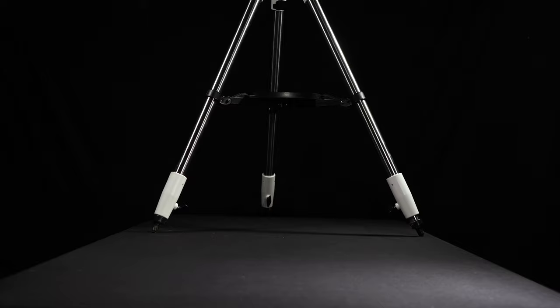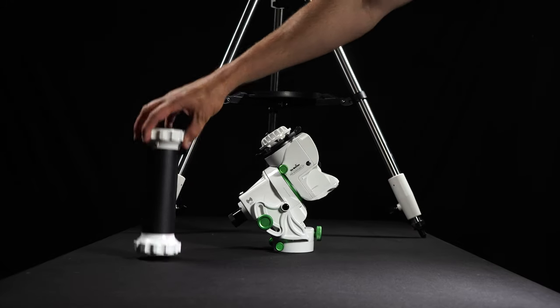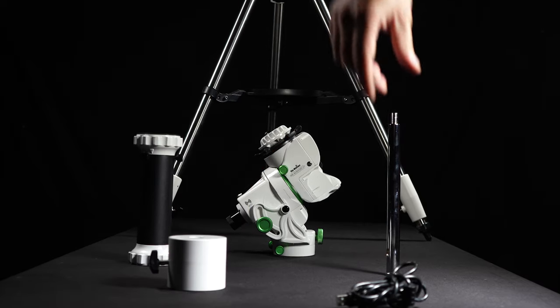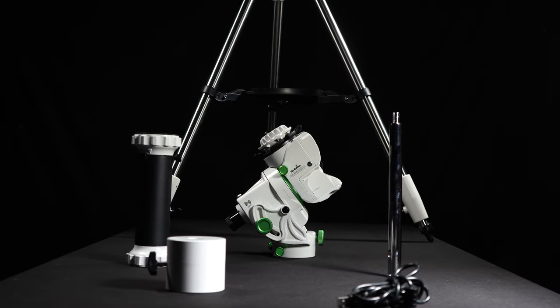So in the box comes a tripod, the mount head itself, a pier extension, a counterweight bar, a five pound counterweight and a USB cable for computer control. So the setup process is similar to any other equatorial mount and it's quite simple.